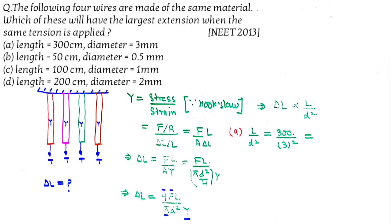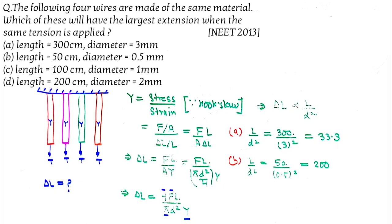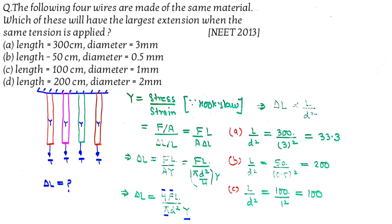Putting in the values: option A gives l by d squared equal to 33.3, option B gives 200, and similarly for options C and D. The maximum value is in option B, so the answer is B.